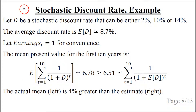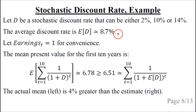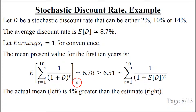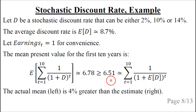Let's give an example with a stochastic discount rate that can be either 2%, 10%, or 14%. The average discount rate is about 8.7%. With earnings equal to 1 for convenience, I use a computer spreadsheet to calculate the mean present value for the first 10 years. The actual mean present value is about 6.78, and when we estimate it using the mean discount rate, it is only 6.51. So the actual mean is about 4% greater than the estimated mean.